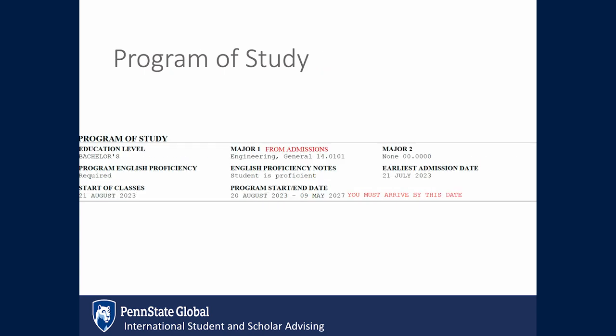The program of study lists the major that comes from the admissions office or from your department. It may appear different than what is on your admission letter. Your program start date is when you must arrive to campus. The earliest admission date is 30 days prior to the start of classes — that is the earliest date you are permitted to use the I-20 to enter the United States.